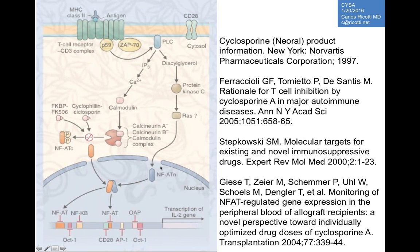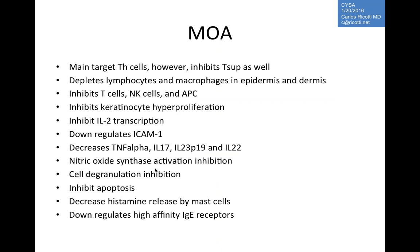In addition to this well-known pathway, cyclosporine also has effects in the TGF-beta pathway as well as certain MAP kinase pathways, stimulating transcription of other genes involved in the inflammatory process.